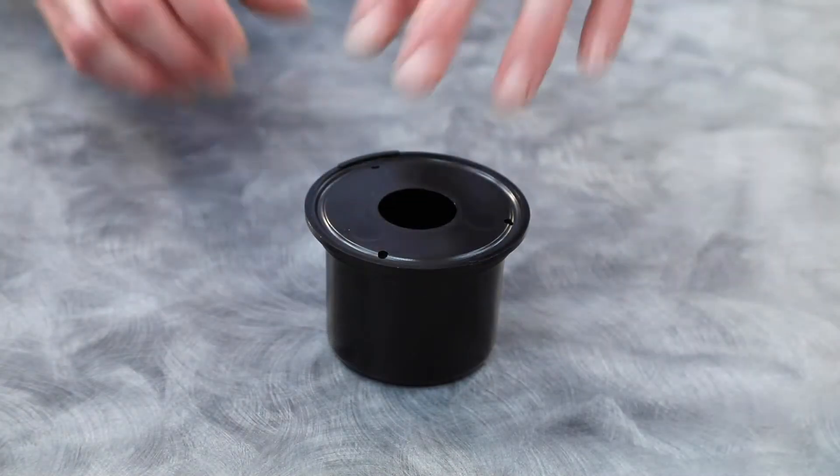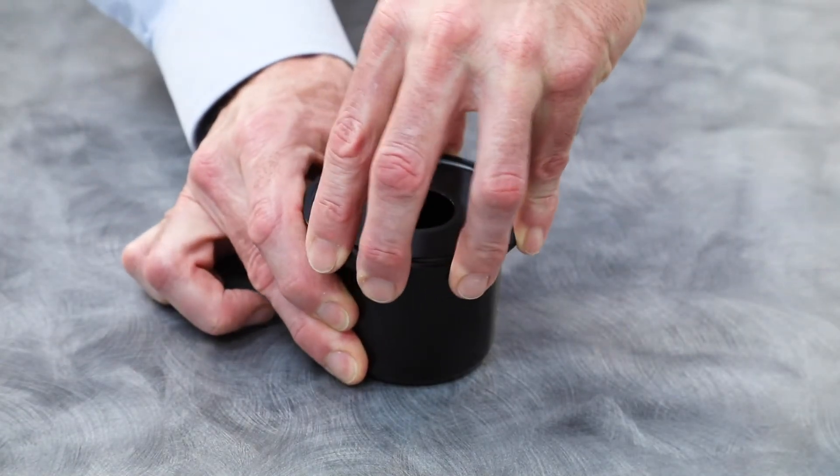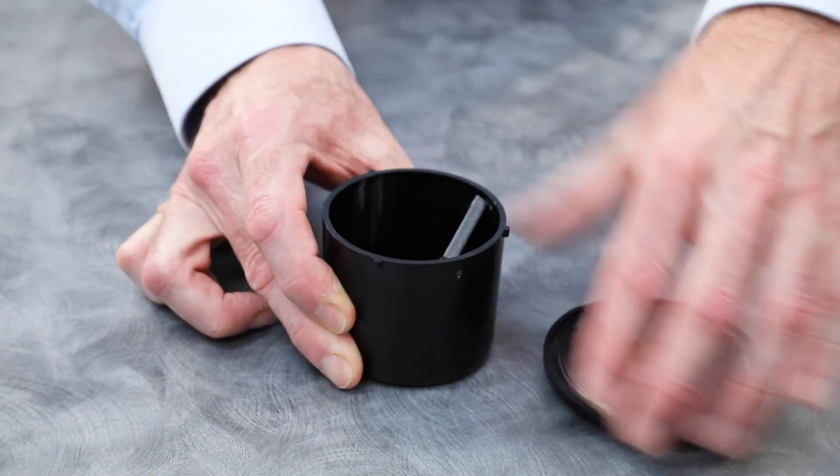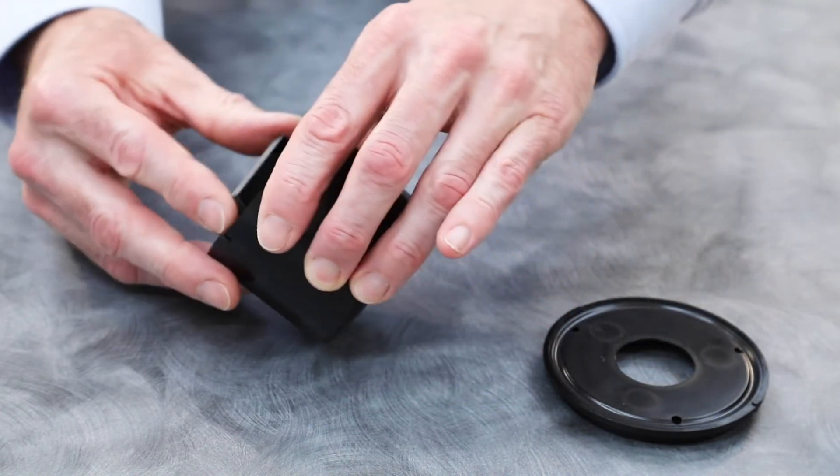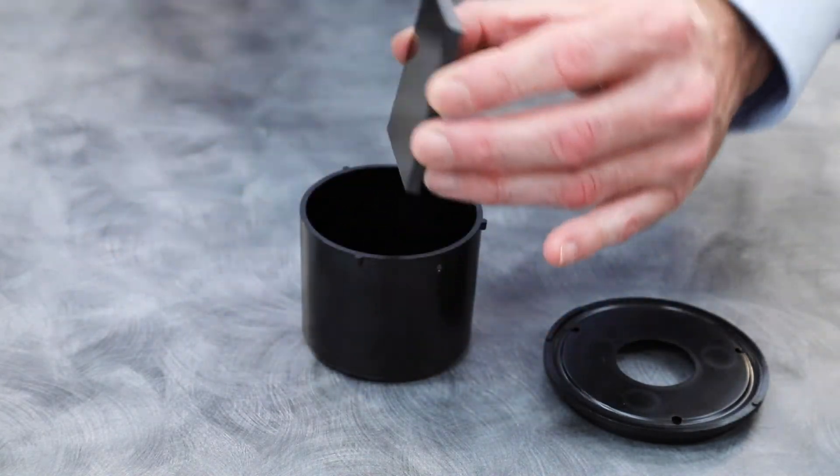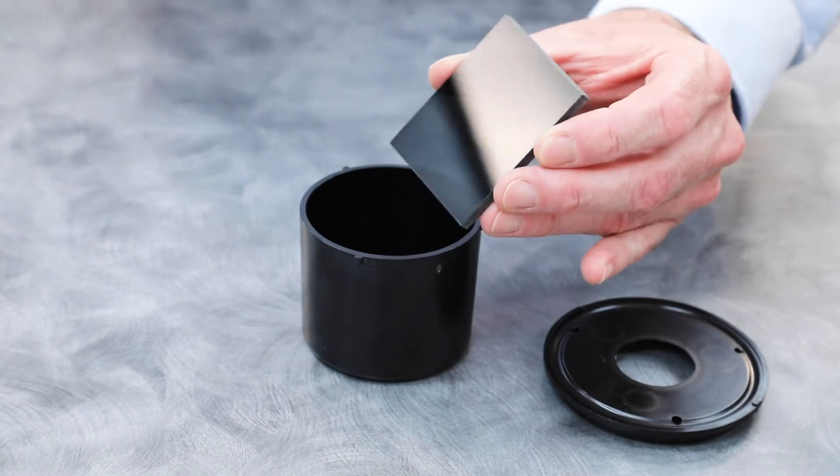To clean the black trap, separate the base from the trap by turning it counter-clockwise and lifting upwards. Carefully remove the trap glass from the trap by holding the edges.